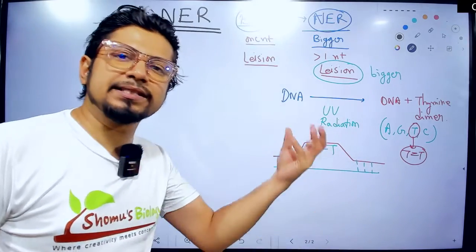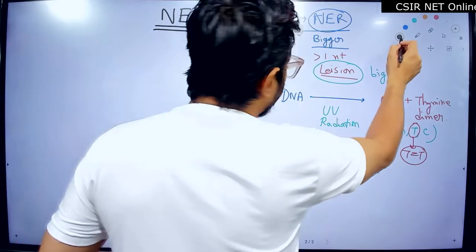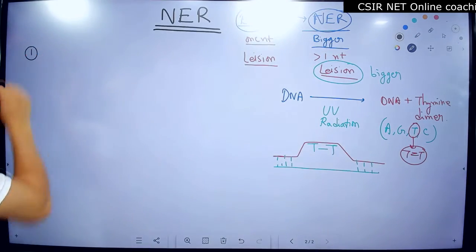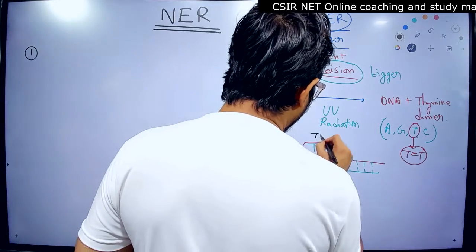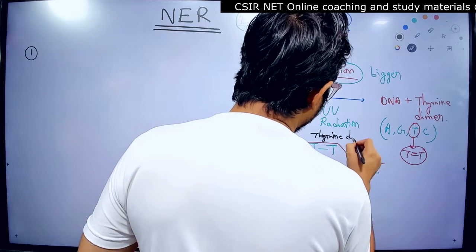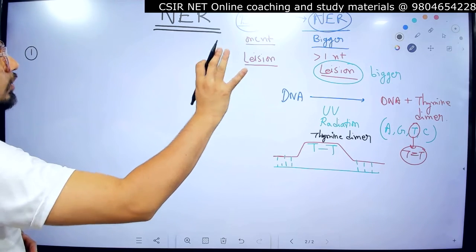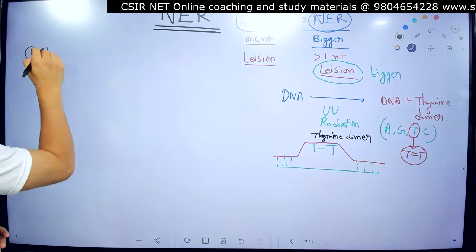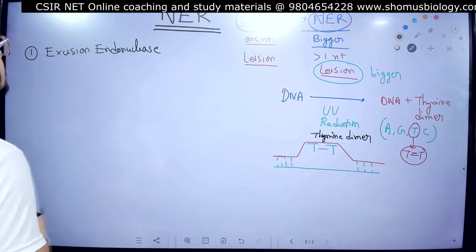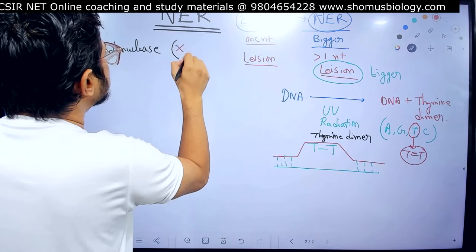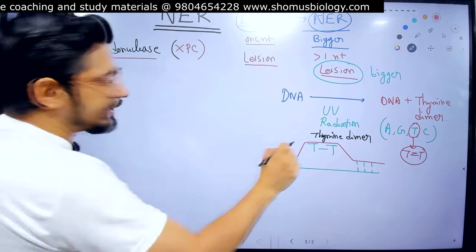I will now explain exactly the steps of Nucleotide Excision Repair, the enzymes involved, and how they work. The very first job is to detect the damage — the thymine dimer. This thymine dimer can be detected by a set of enzymes known as excision endonucleases. The example of an excision endonuclease involved here is XPC. XPC detects and binds to the thymine dimer in the first place.